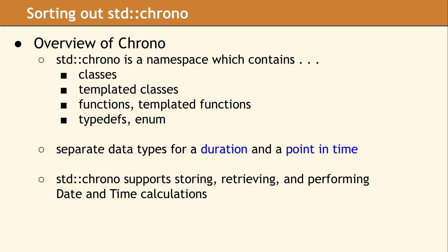STD Chrono is a namespace. It is not the name of a class or a library. This namespace contains a variety of related classes, templated classes, functions, and typedefs. The design for what functionality should be in STD Chrono took several years to develop. One of the main objectives for the committee was to provide separate data types to represent a duration of time and a single point in time. A key factor in the implementation of these two data types was to provide precision in date and time calculations, by using integers internally instead of floating point numbers.